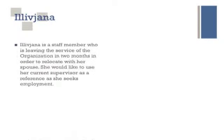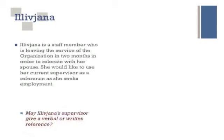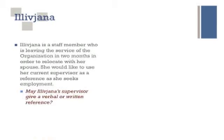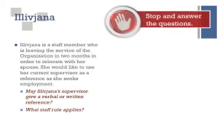In this next situation, Ileana is a staff member who's leaving the organization in two months. Her spouse has taken a new position, and she has to relocate with him. She would like to use her current supervisor as a reference as she looks for new employment. The two questions are: may her supervisor give a verbal or written reference, and what staff rule applies?